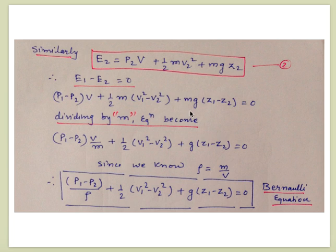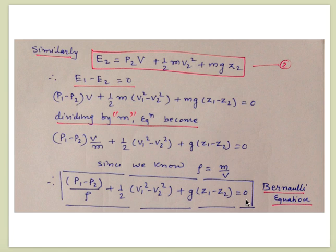Dividing the complete equation by mass: the V/m term becomes 1/ρ (since density ρ = mass/volume), and mass cancels from the other terms. The equation becomes: (P1 − P2)/ρ plus (1/2)·(V1² − V2²) plus g·(Z1 − Z2) = 0.